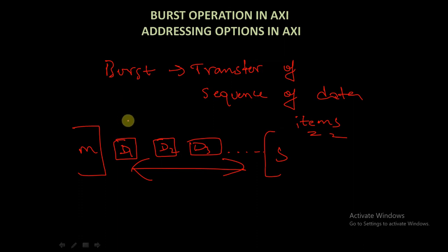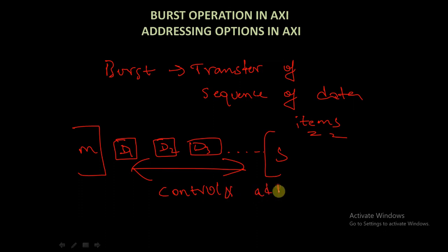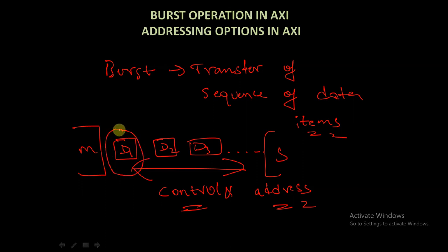The AXA protocol is burst-based and designed to support high performance communication. When a burst is initiated, the master is responsible for driving both the control and address information of the first byte in the transfer. As the burst transaction progresses, it becomes the responsibility of the slave to calculate the addresses of the subsequent transfers within the burst.